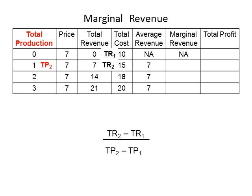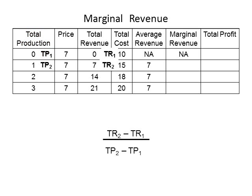Locate the second row of numbers in the total production column and write TP2 next to it. Next, locate the first row of numbers in the total production column and write TP1 next to it. Once the formula is written down and the levels of total revenue and total production are labeled, the marginal revenue can be calculated. Locate TR2 on the table — notice that TR2 is associated with a total revenue of 7. Replace TR2 with 7 in the formula.